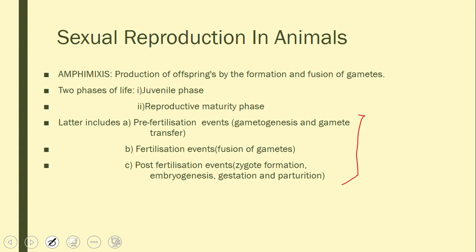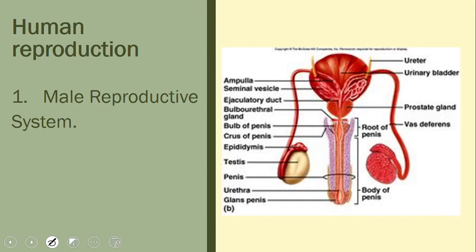Now we will study the first part of human reproduction: the male reproductive system. In your text there is a diagram to label. This study is divided into three parts: first, the testis; second, the different types of ducts — vas deferens, ejaculatory duct, and urethra; and third, the glands — the seminal vesicle, prostate gland, and bulbourethral gland.